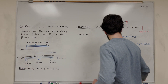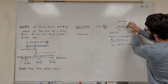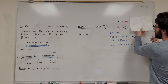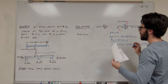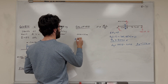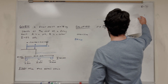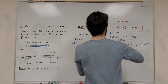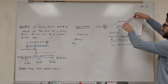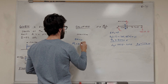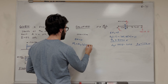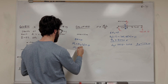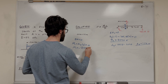For 0 < x < 1.5 meters: we take a cut, draw shear pointing downward and moment pointing this way. Setting the sum of moments equal to zero, the forces causing a moment are the moment itself — M1 — plus A_y, which makes us want to rotate counter-clockwise, multiplied by distance x. Plugging in A_y, we get that M1 equals negative 1275x.